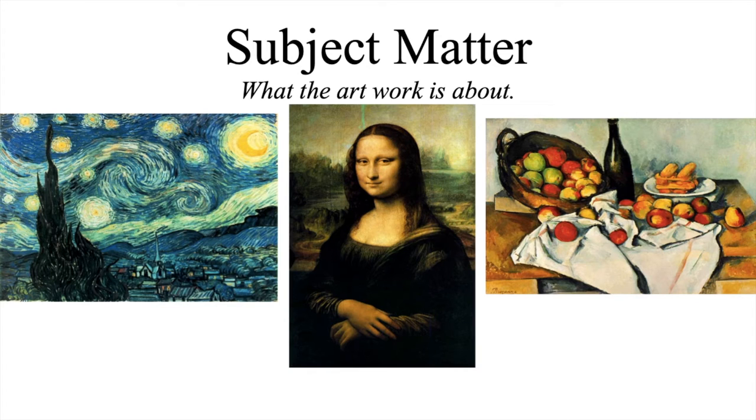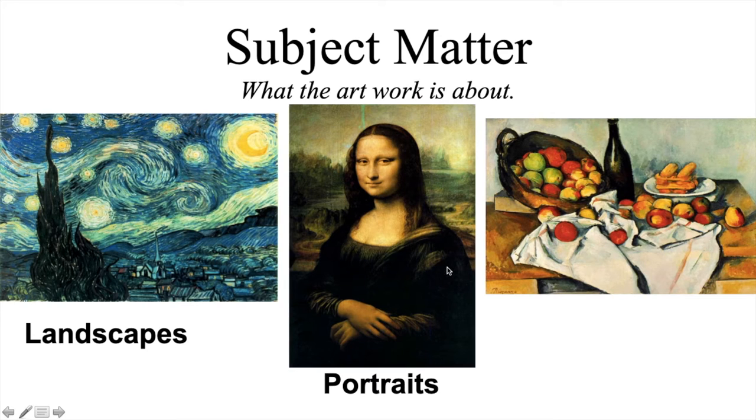So if you paint or draw a picture about outside, we call that a landscape. If you do painting or pictures of a person, portraits. And if you paint or draw pictures or photograph pictures of objects where artists arrange objects on the table, we call that still lifes.